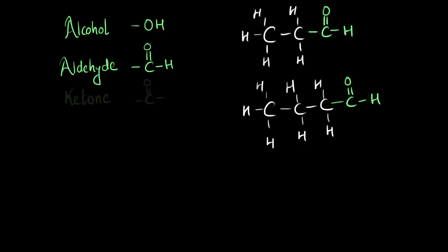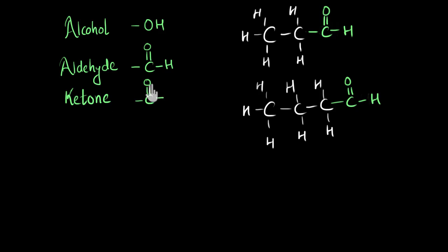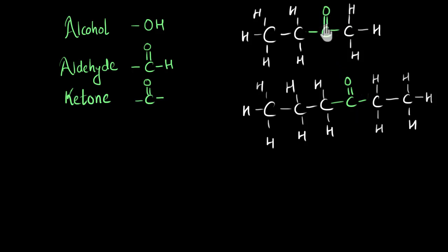Now let's look at another functional group: the ketone group. The group of atoms here is carbon double bonded with oxygen, pretty similar to aldehyde — they both have C double bond O. But the difference is that ketone is open at both ends: at both ends, carbon chains are attaching. Whereas in aldehyde, one side has a hydrogen atom and only one side has a carbon chain. So ketone has C double bond O with carbon chains on both sides. If one of those carbon chains were replaced by a hydrogen atom, we would call it an aldehyde. Ketones are generally used in medicines.